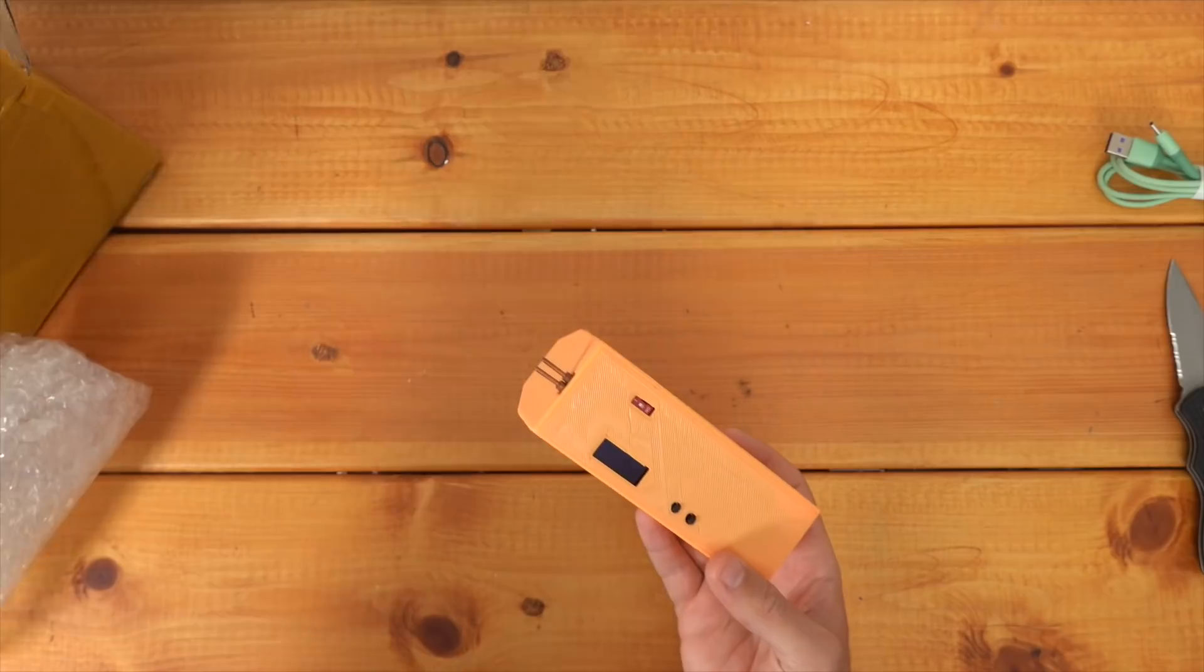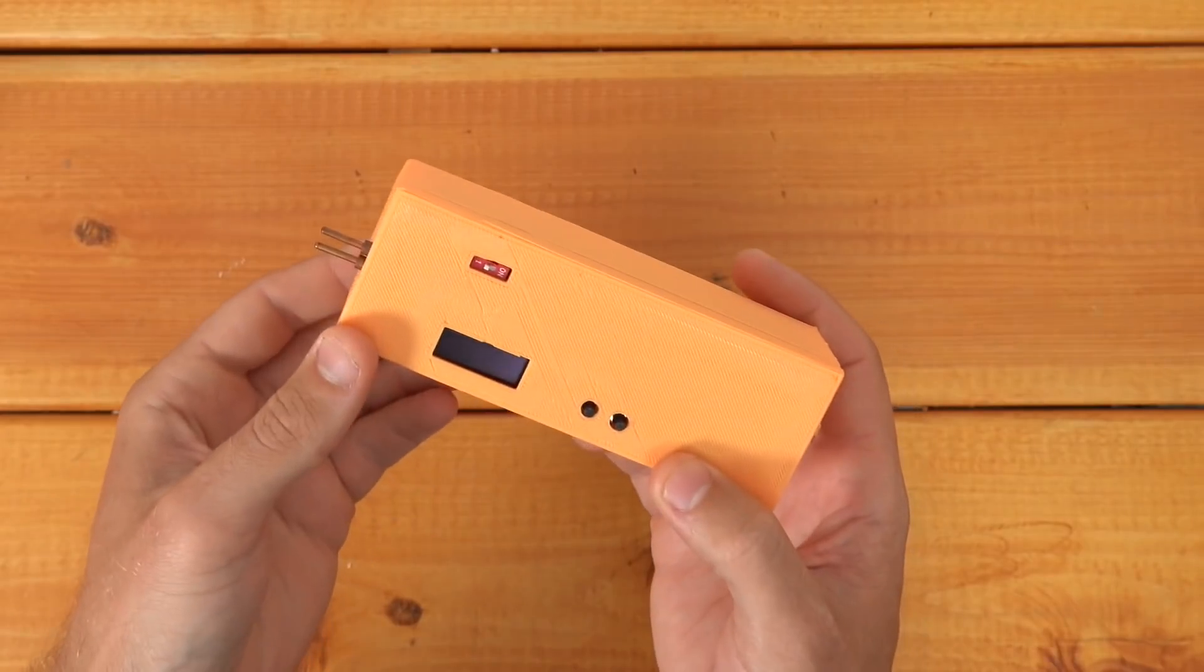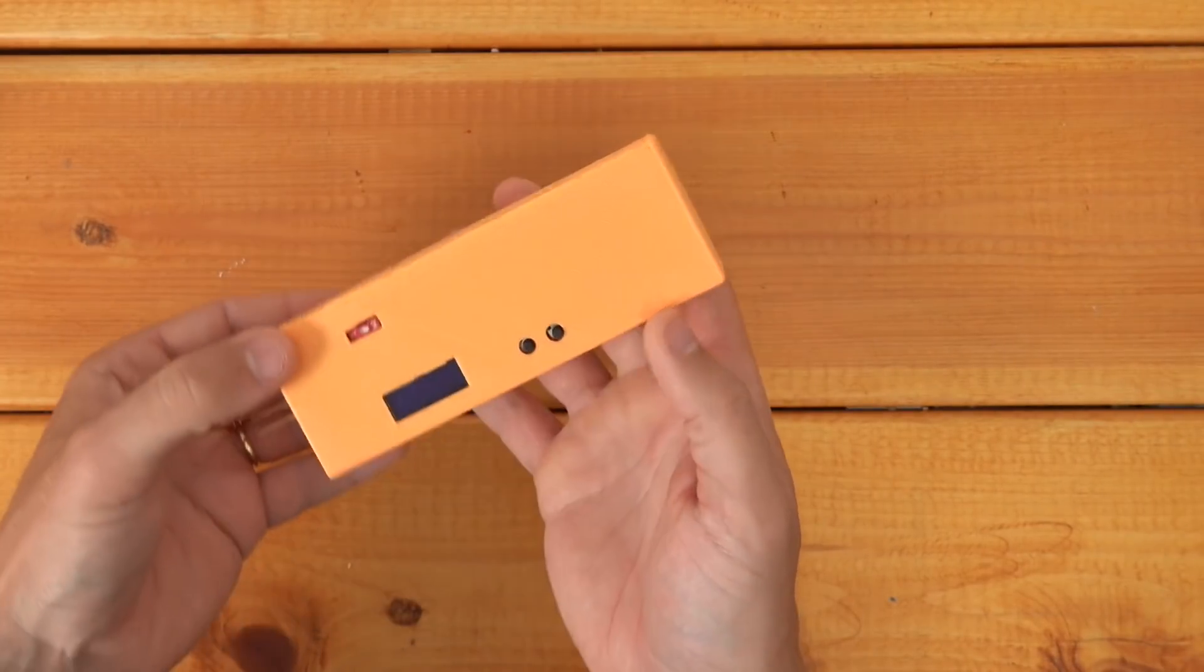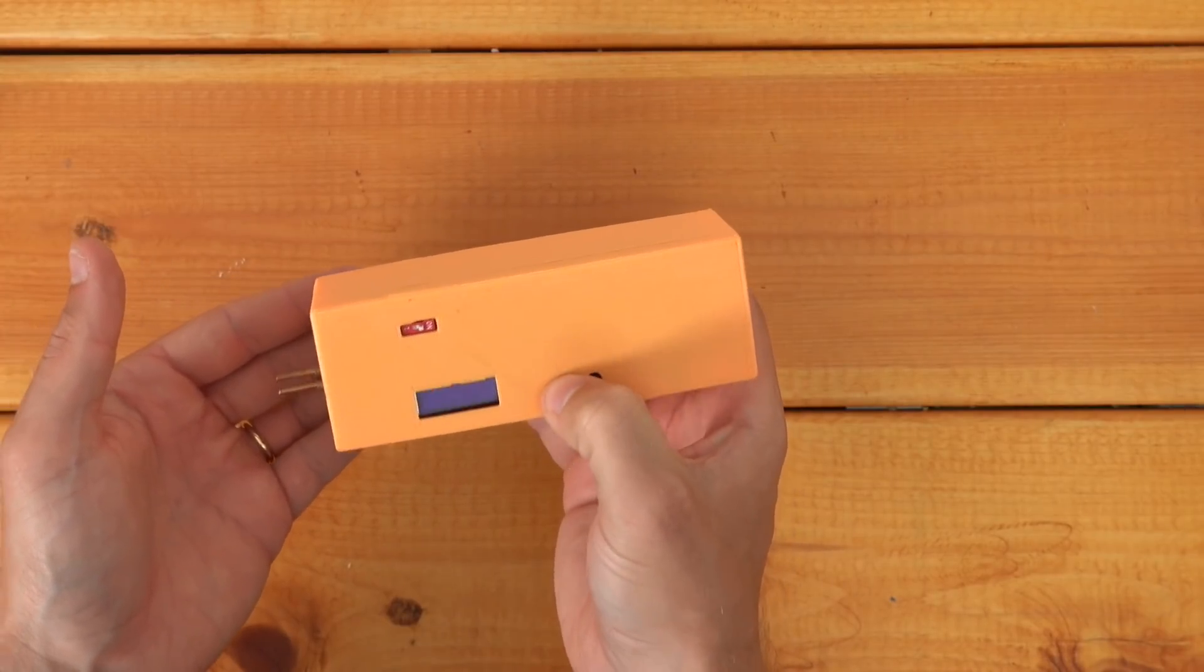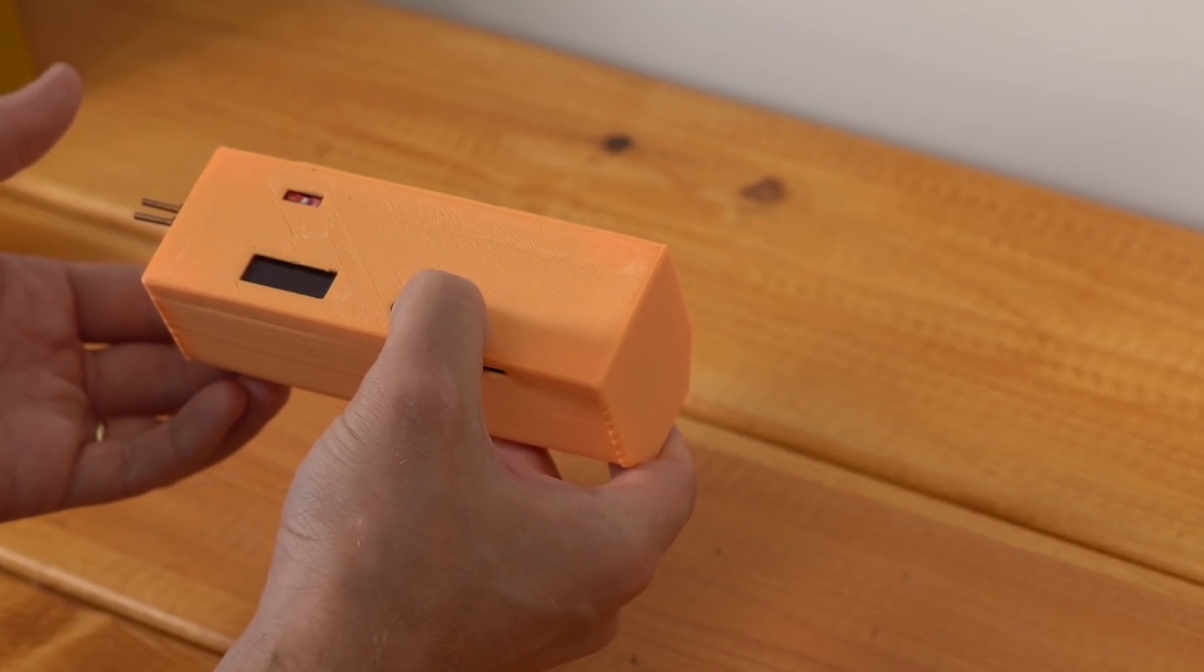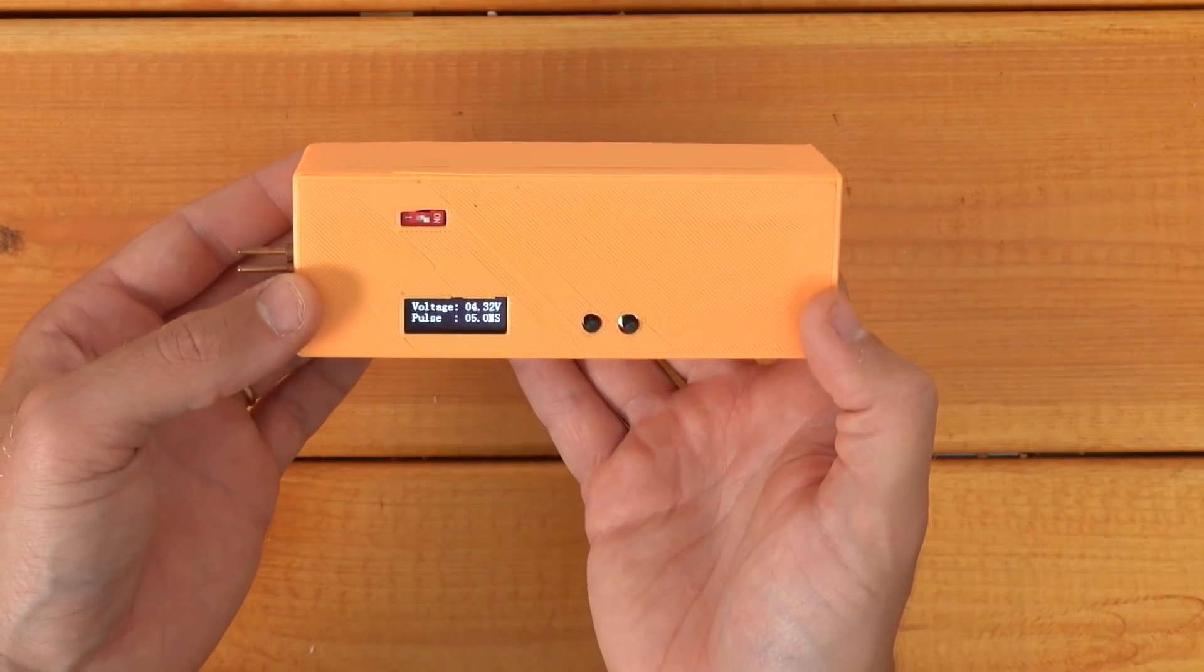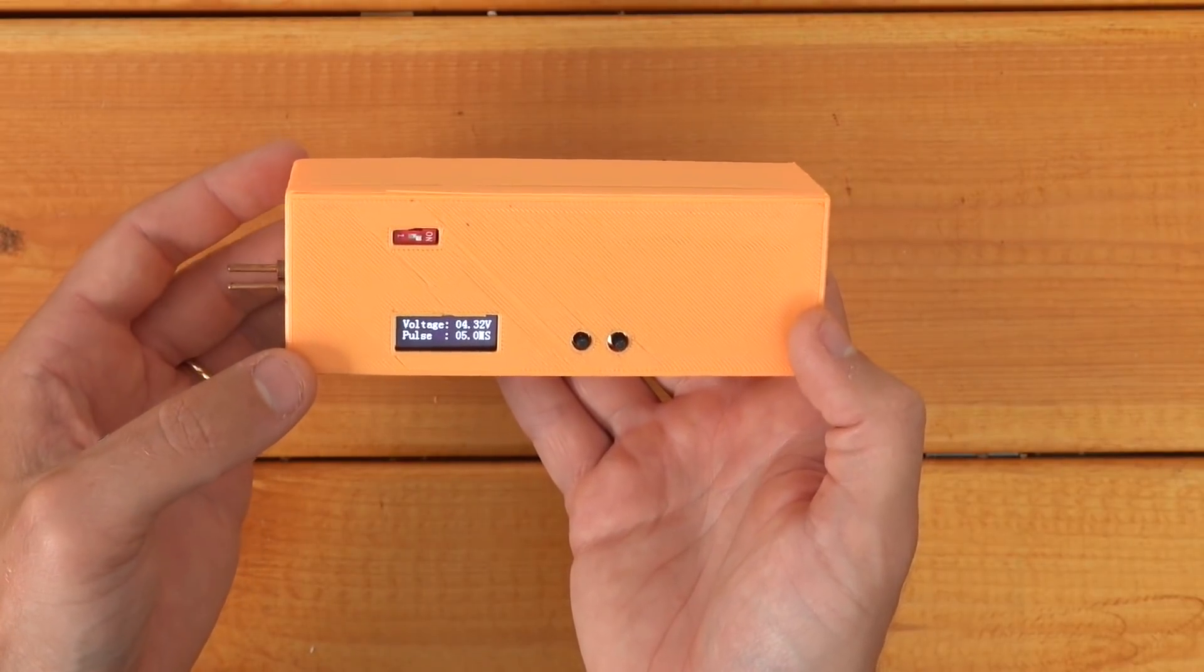All right so it didn't come with any instructions in the box here but from the product page it said that you basically turn it on and then you push one of the two buttons. All right screen flashed there, hold that, nothing's happening. Okay there we go, so we're on 4.32 volts. I don't know what kind of battery is in this but that would be a bit high for most lithium-ion batteries.